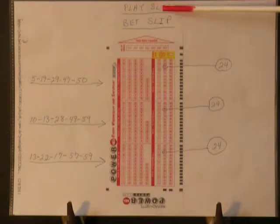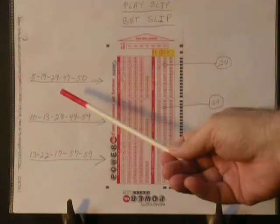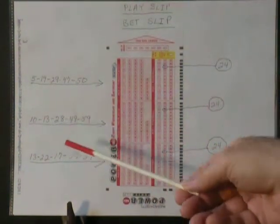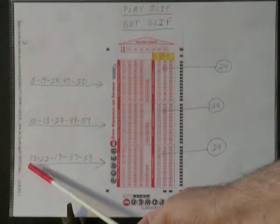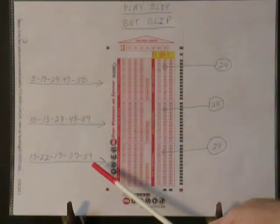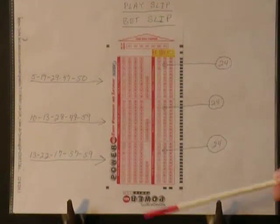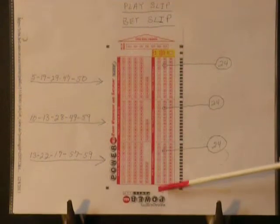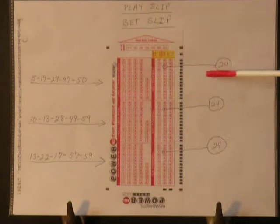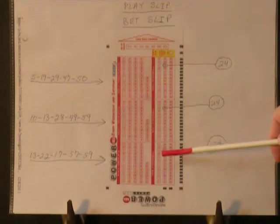Here is our second bet slip. The same three five-number sets — 5, 19, 29, 47, 50; then 10, 13, 28, 49, 59; then 13, 22, 17, 57, 59 — all going into sections 1, 2, 3. Over in our bonus section, 24 is going on this bet slip: 24 in the first, 24 in the second, 24 in the third.